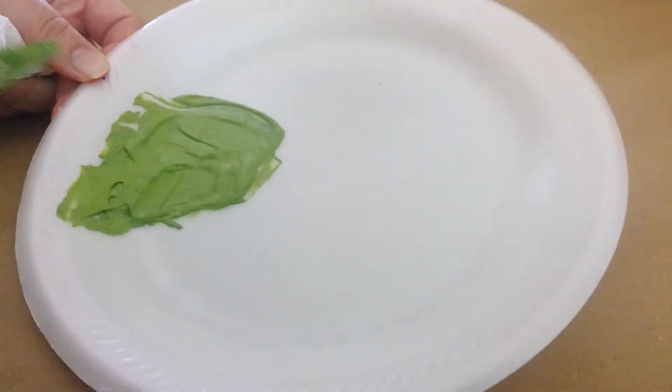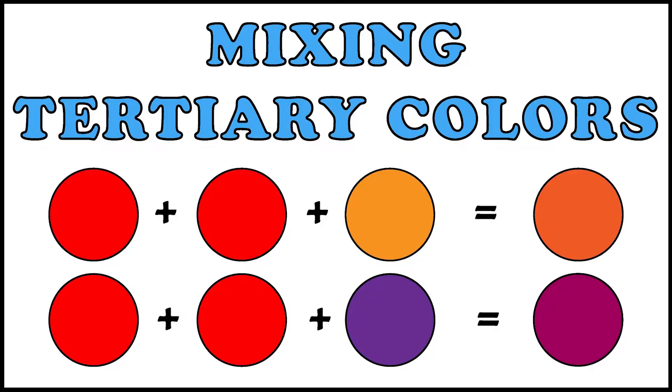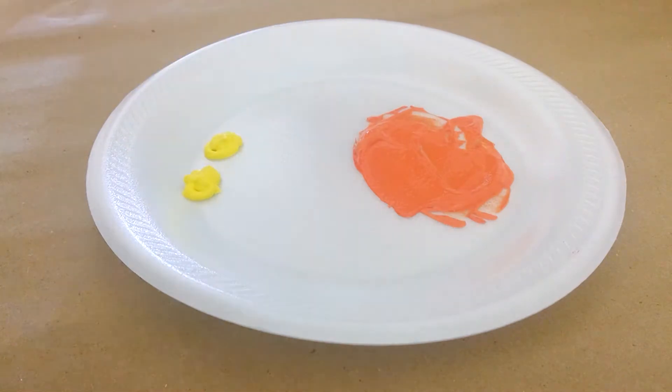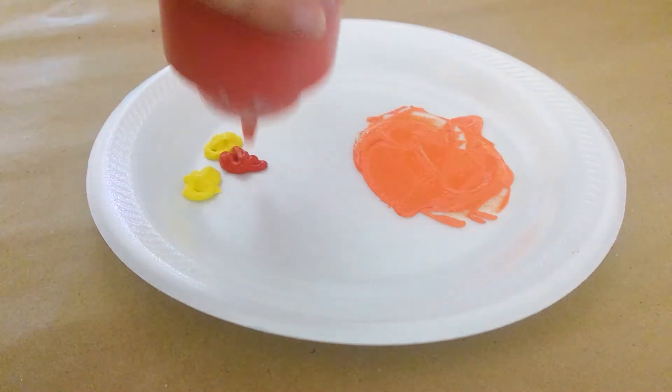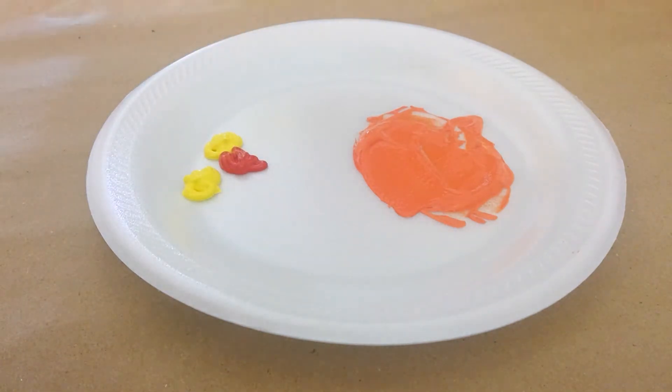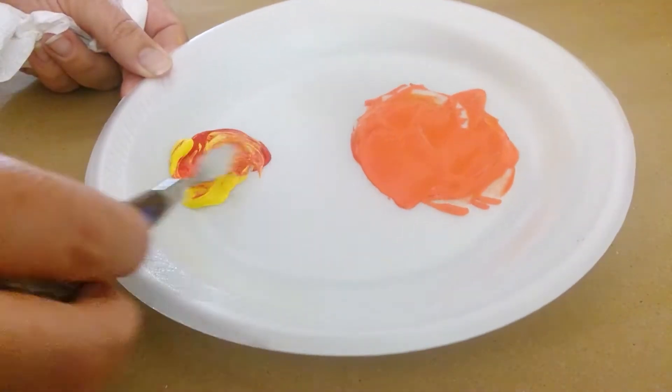Next up we have the tertiary colors that are made using red. This time we're going to start with orange again, which is two parts yellow and one part red.